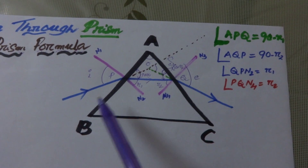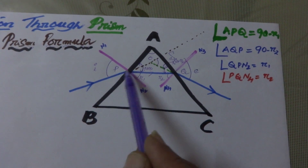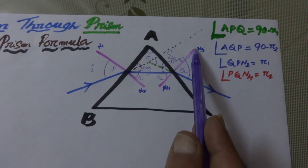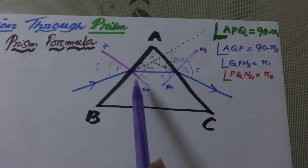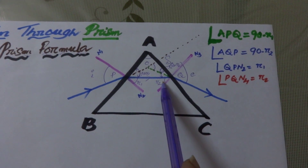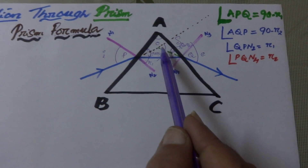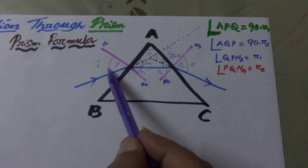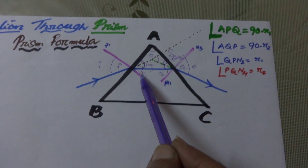We always define the angle of incidence as the angle between the incident ray and the normal. At point P, angle i is the angle of incidence. The angle between the normal and the emergent ray is called the angle of emergence, represented by e. The angle between the normal and refracted ray inside the prism is r1, and r2 at the other face. We are going to establish a relation between the angle of the prism, angle of incidence, angle of emergence, and the relation between A, r1, and r2.